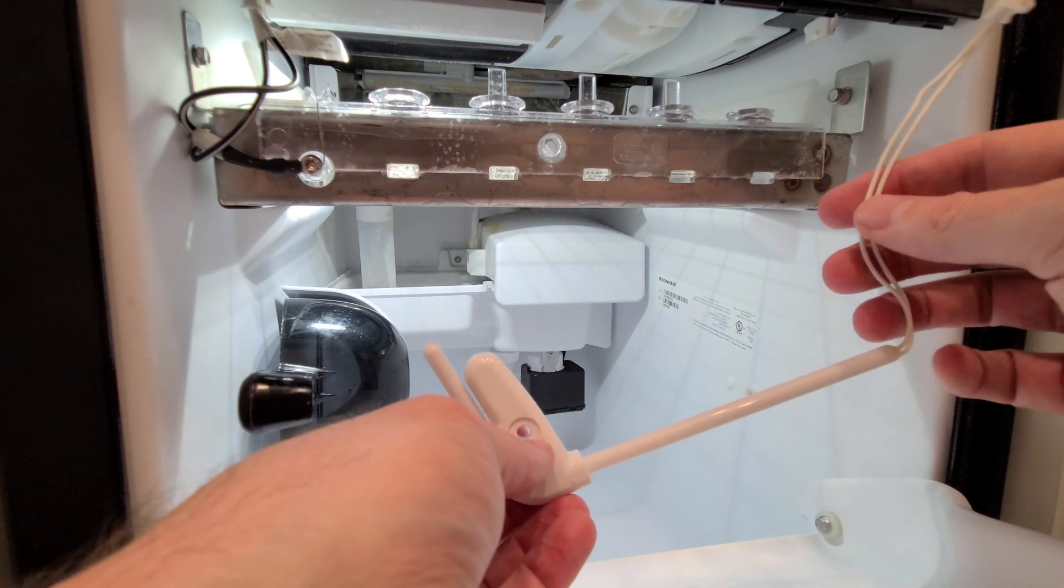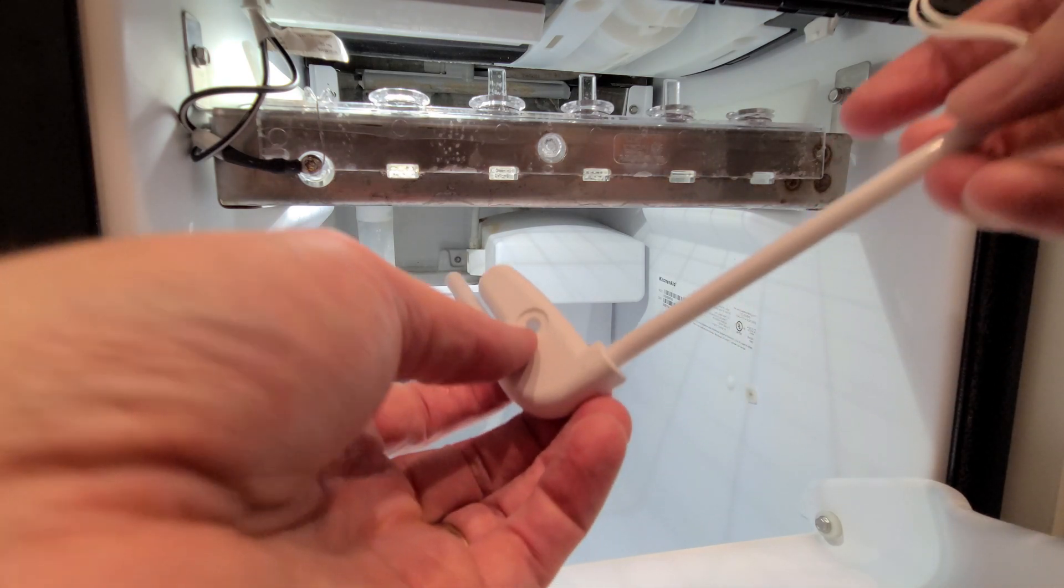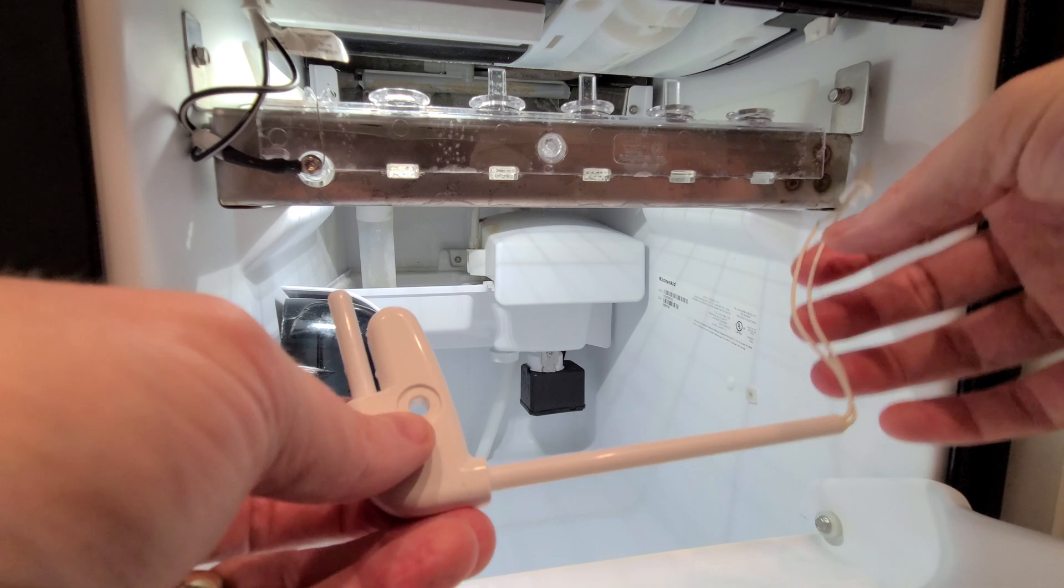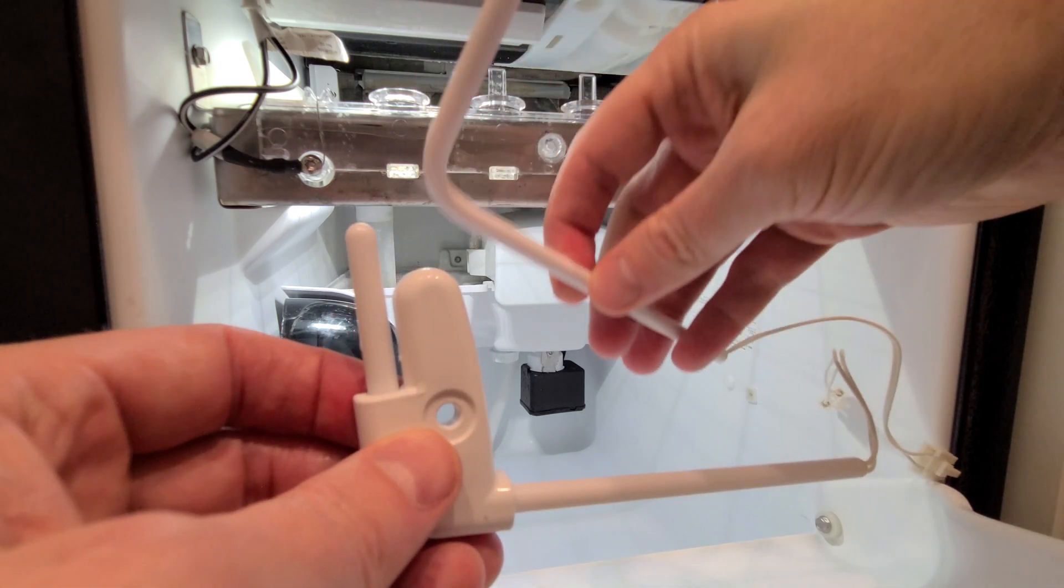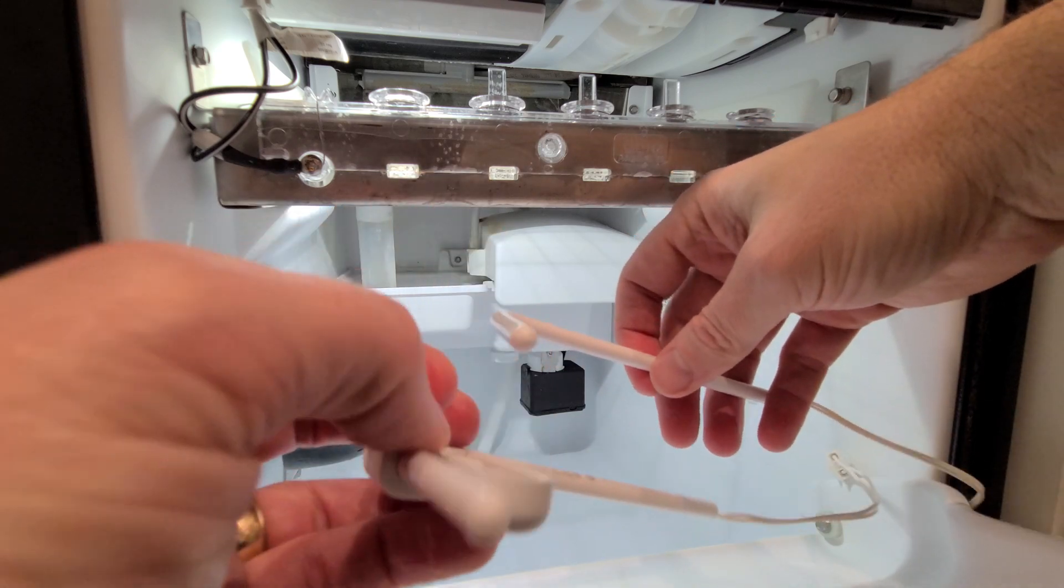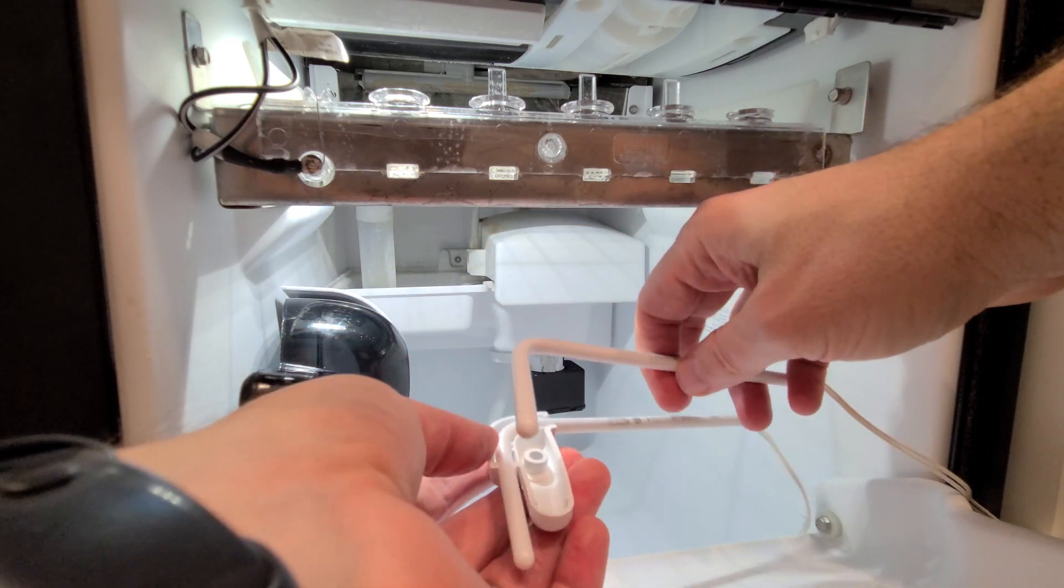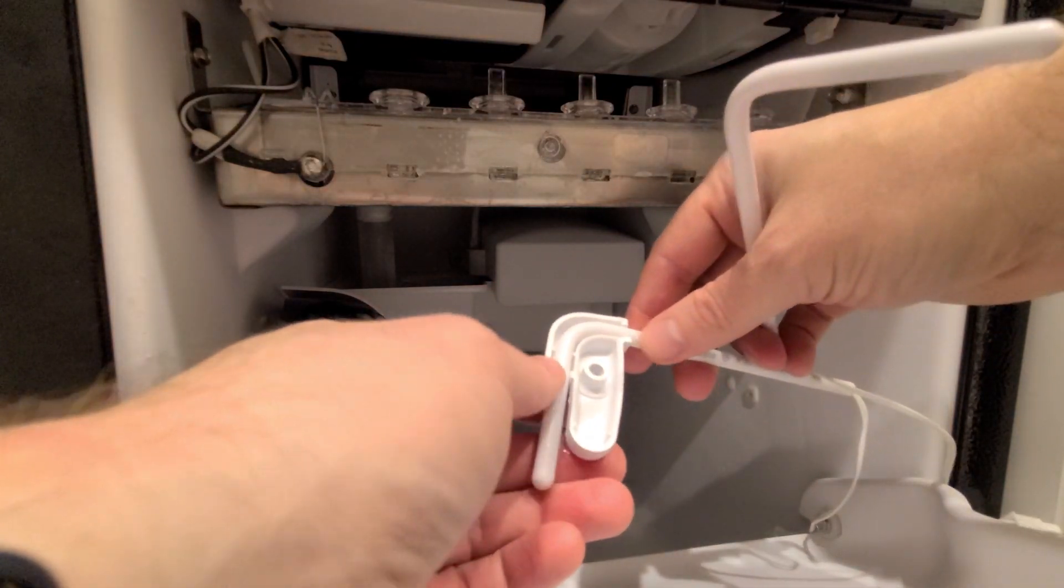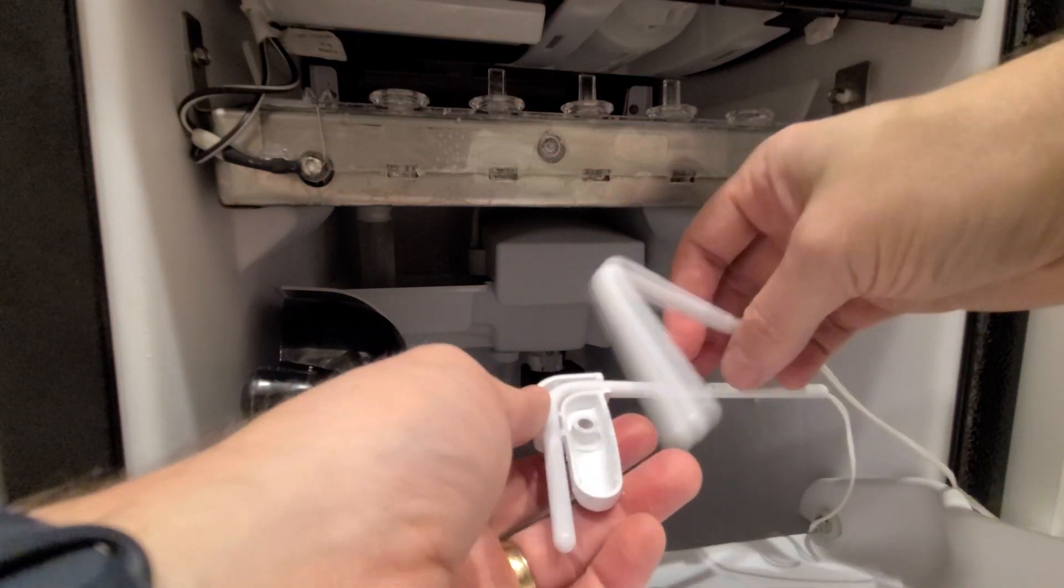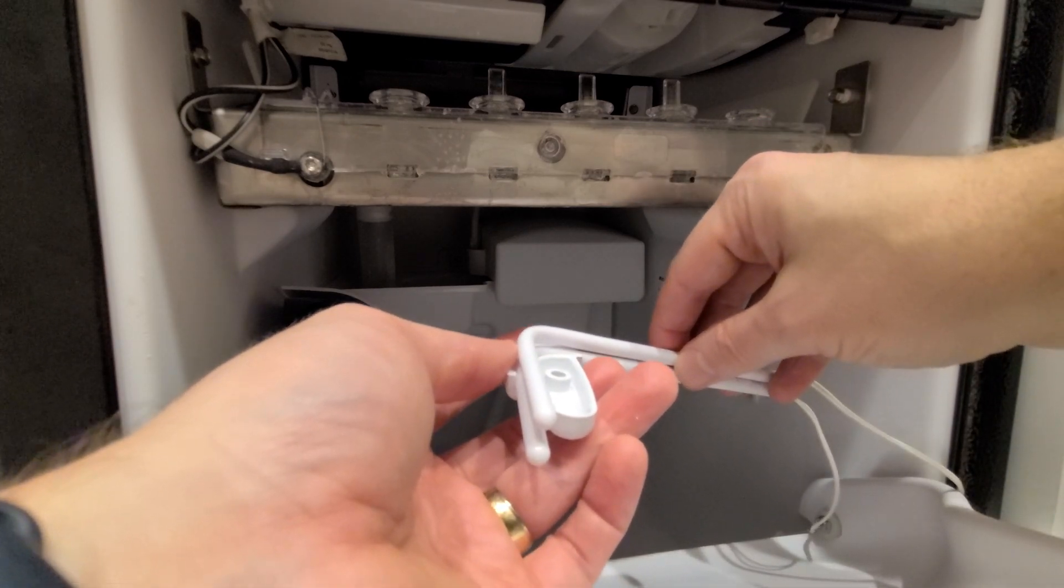So we have this old thermistor. This one is bad. It's not detecting the temperatures correctly. And so I've purchased a new one. And so all we need to do is snap off the old one, just pop straight out and then you pop in the new one.